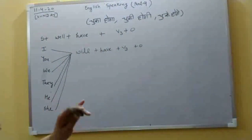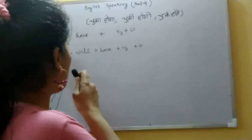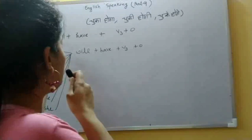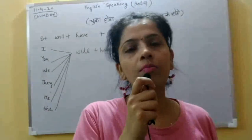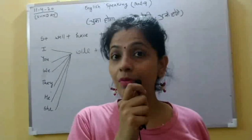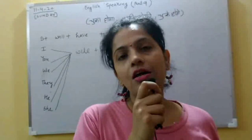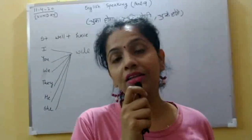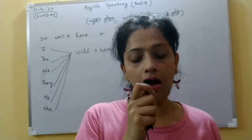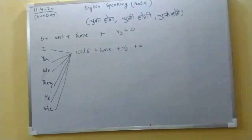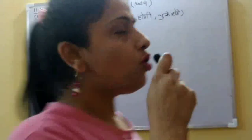So here we go. It's very easy. Your structure is: subject plus 'will have' plus verb third form plus object. The helping verb here is 'will have.' Keep in mind that 'will' always takes 'have' — this is the reason we use 'have' here, not 'has.'